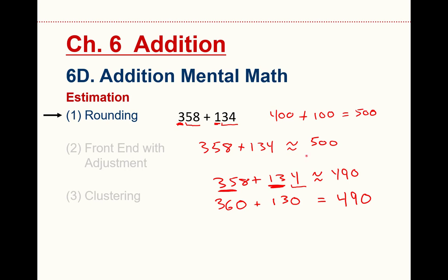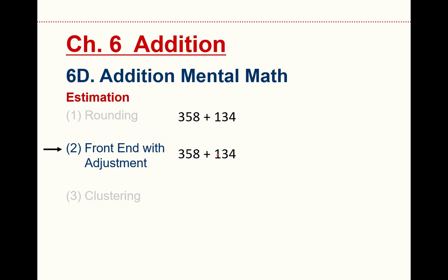Let's take a look at another technique. Front end with adjustments. I like this one. This is a little bit more sophisticated than rounding, but it's not much more difficult. The front end says look at your first digits, or the hundreds place, matching places, and just add those straight out. So 400, I imagine 300 plus 100. Then I look at the remaining digits and I do first digit rounding. So if I round that 58, that's going to become 60, and the 34 just reduces to 30. 60 and 30 is 90, so my 400 plus 90 is 490.